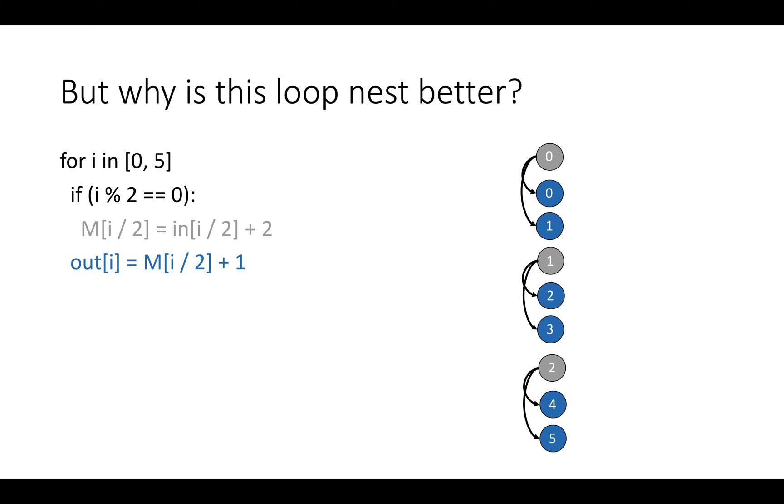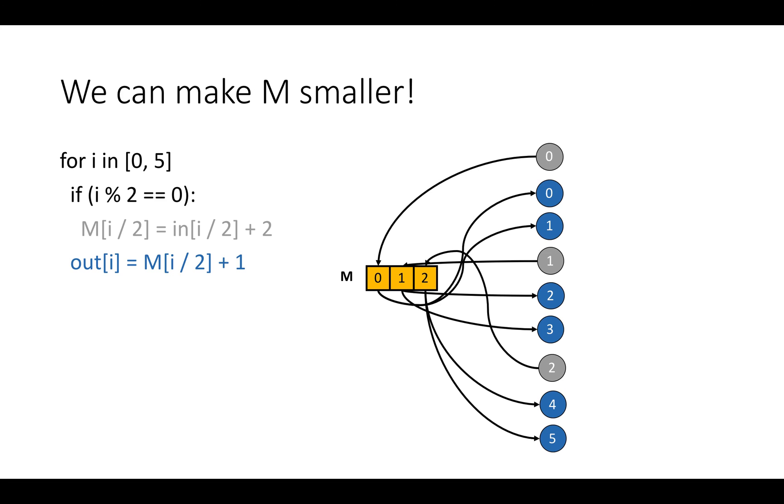So why is this loop nest better? I've already hinted at why it's better by saying that this loop nest has better locality. But the real reason is that we can make M, our memory buffer, smaller. So as I'm going to talk about in more detail in the next video, this new order of operations which has better locality is really better because we actually don't need all three memory locations. In this new order of events, we can actually use one slot in memory to do all of the communication between producers and consumers in this loop nest. So I'll talk about that more in the next video. See you then.